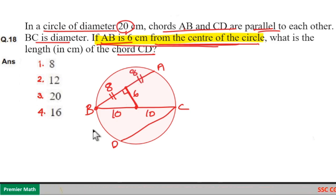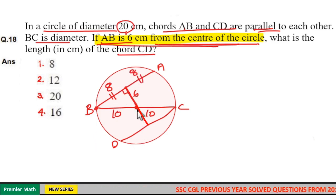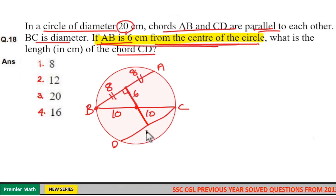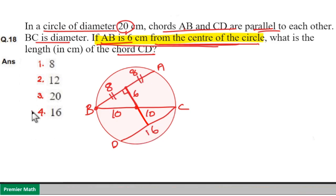Similarly, considering the same triangle for CD — since AB is 16, CD is also 16 centimeters. So option 4 is your answer.